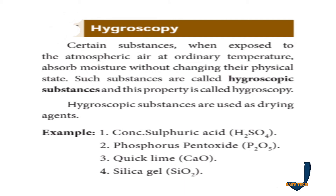Hygroscopic substances: certain substances, when exposed to atmospheric air at ordinary temperature, absorb moisture without changing their physical state. Such substances are called hygroscopic substances and this property is called hygroscopy. Whether it is a solid, liquid, or gas, it remains in the same state but absorbs moisture. Examples include concentrated sulfuric acid (H₂SO₄), phosphorus pentoxide (P₂O₅), quicklime (CaO), and silica gel (SiO₂).